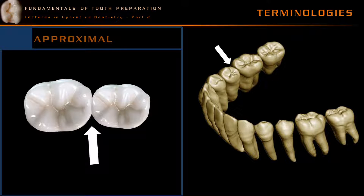A proximal caries is a type of dental caries which is present in both sides — that is, in the distal surface of one tooth and the mesial surface of the other tooth. When these types of caries come into contact with each other, the management has a specific protocol to be followed.